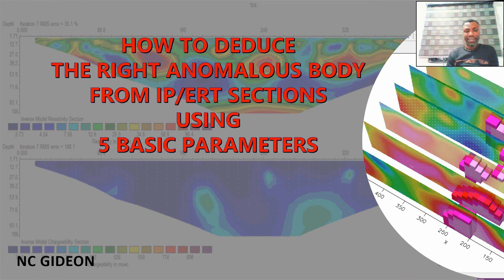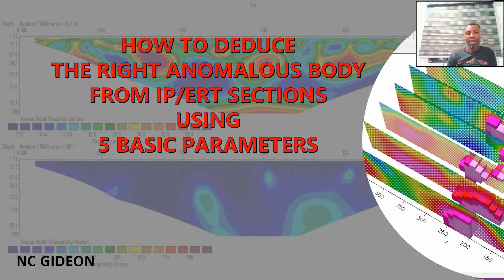Today we will look at how to deduce the right anomalous body from IP and ART sections using five physical parameters. My name is NC Gideon, a geologist in geophysics and a mine planner.